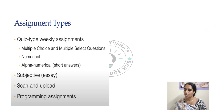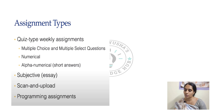What are the different types of assignments? We are having different types of assignments based on the courses. This is a quiz type of weekly assignment. In the quiz type weekly assignment we are having three types: multiple choice questions, multiple select questions, numerical questions, and alphanumeric short answers. Another type is subjective — that is essay type questions. Next, you need to scan and upload copies for some subjects. And next is programming assignments which are related to C, C++, and Java.